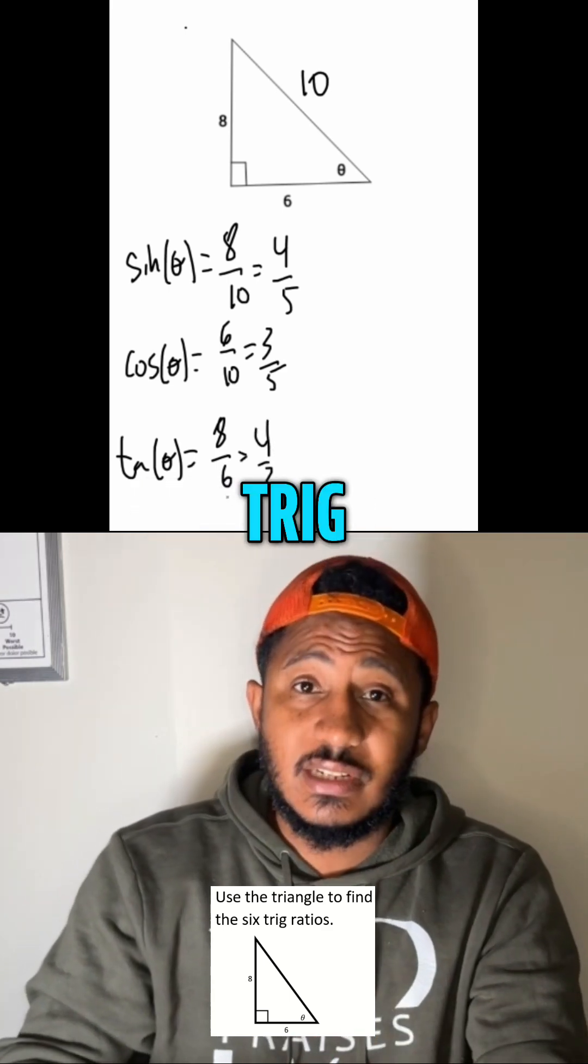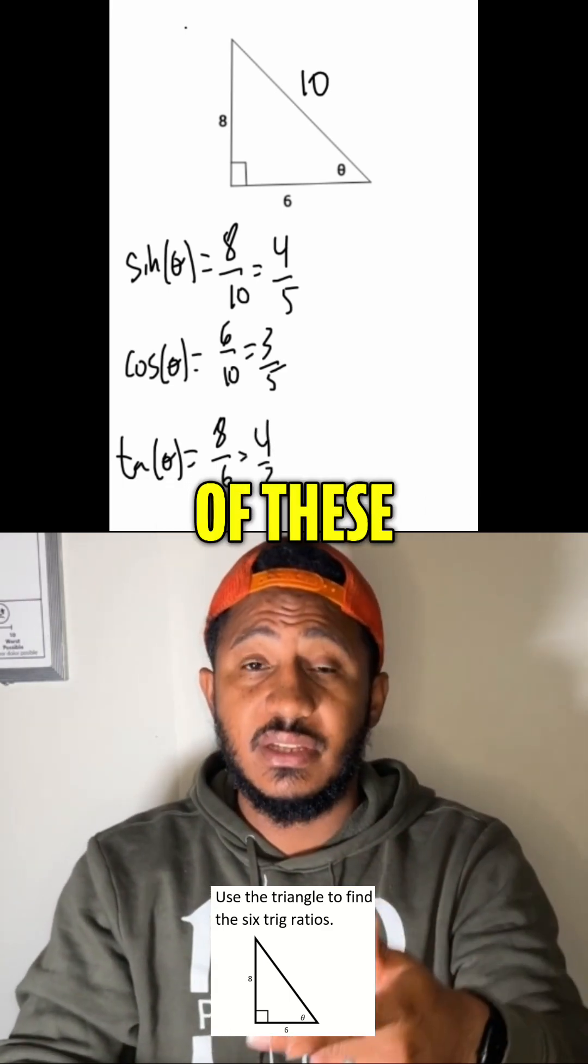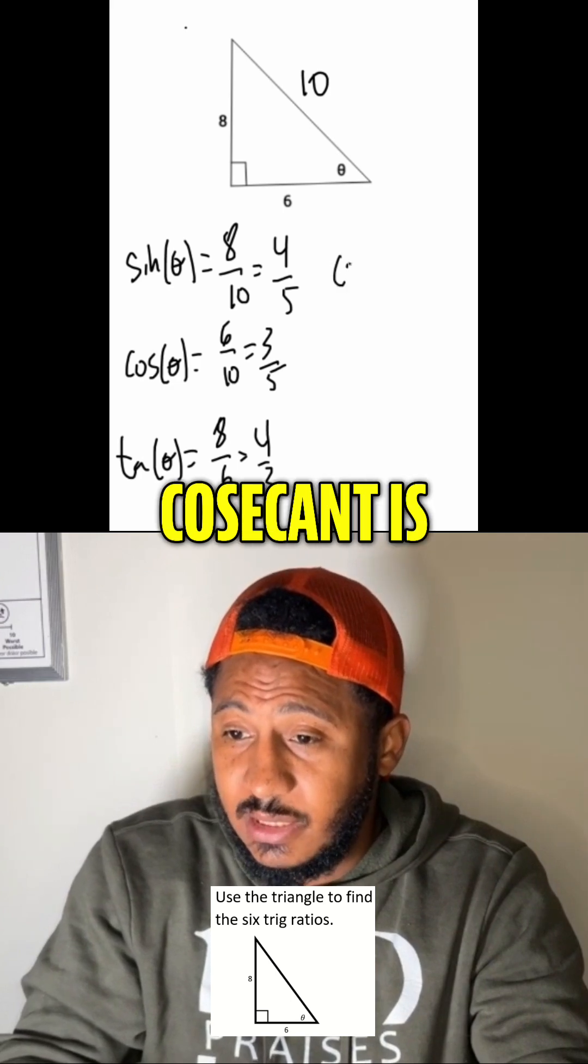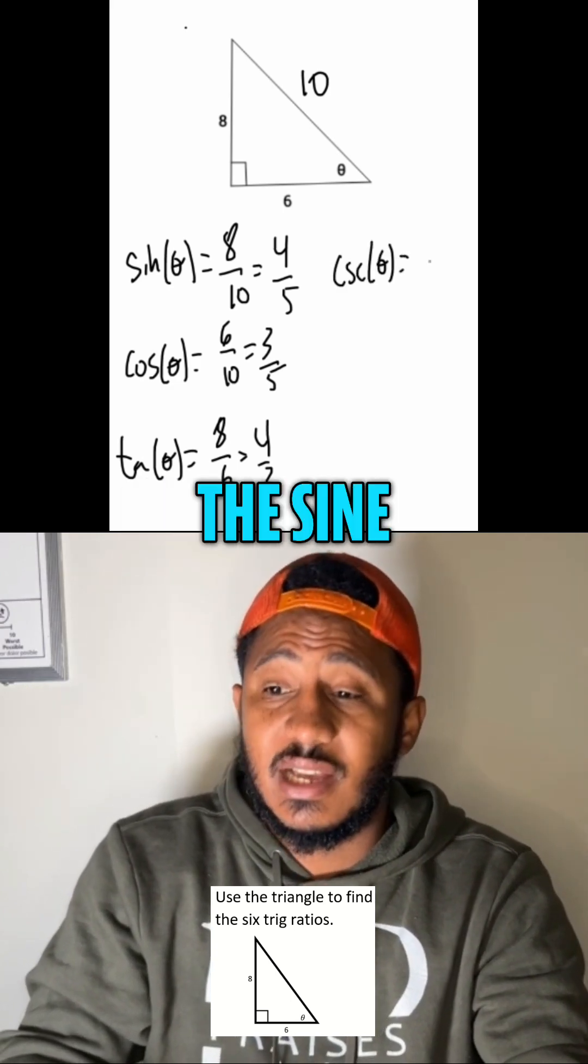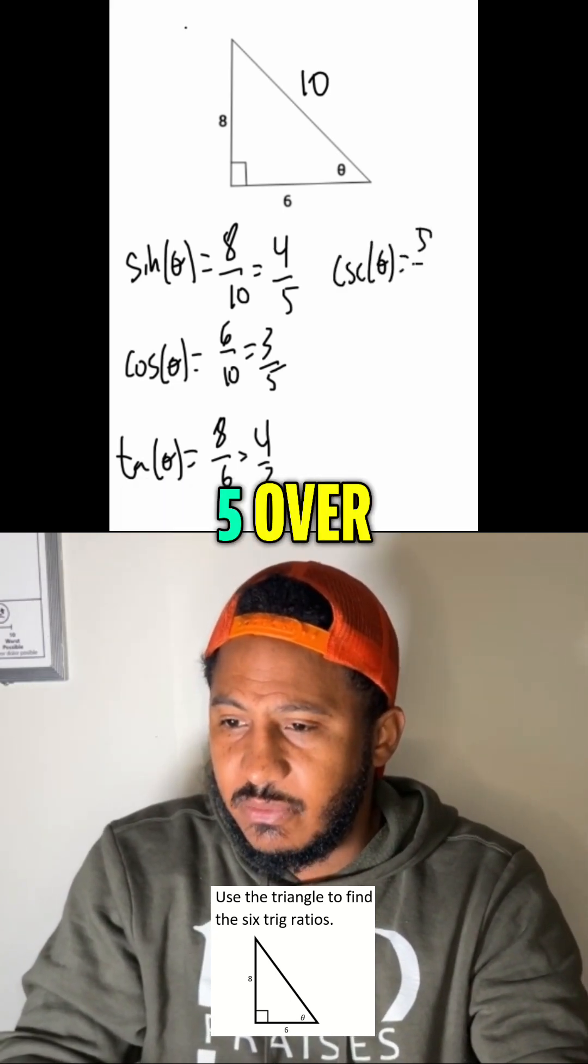In other words, 4 thirds. And then, the other trig functions are reciprocals of these. So, the cosecant is the reciprocal of the sine. So, that would be 5 over 4.